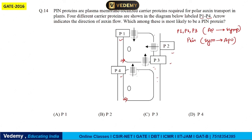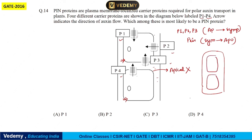It might seem that P4 is at the apical portion, but if we rotate this cell, the basal region would shift accordingly. After rotation, P4 still represents symplast to apoplast transport. So the PIN protein always takes auxin from symplast to apoplast, and we can say that the fourth option — P4 — is the correct one.